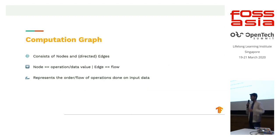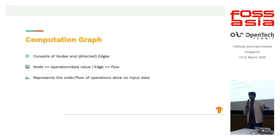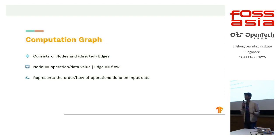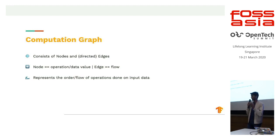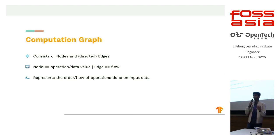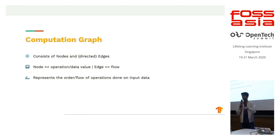What TensorFlow does when you're creating a neural network and specifying each layer is that in the background, at a low level, it creates a computation graph. The computation graph is an organized view of all the processes occurring in your entire pipeline. It consists of nodes and edges. Each node pertains to a specific operation or data value, and an edge is the flow of data or operation being performed on that variable.